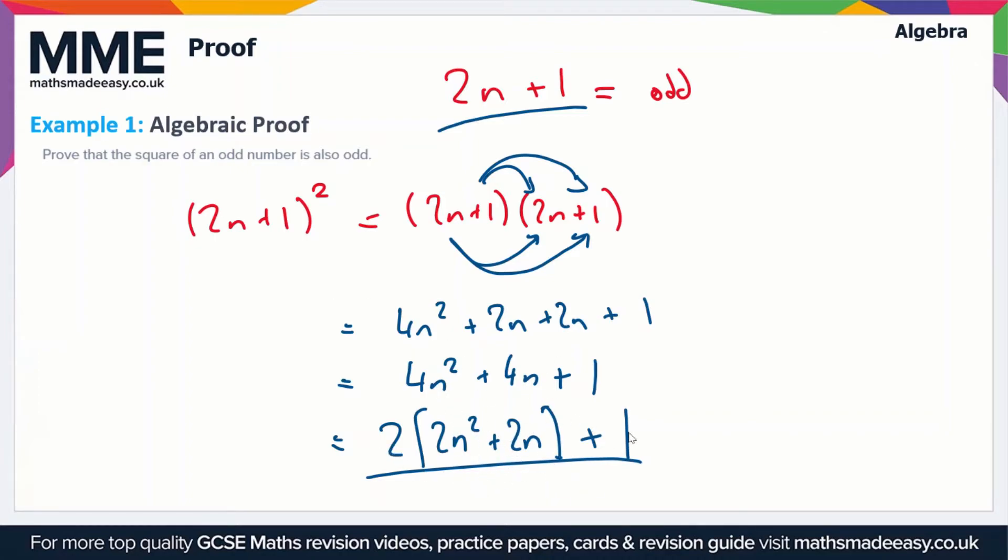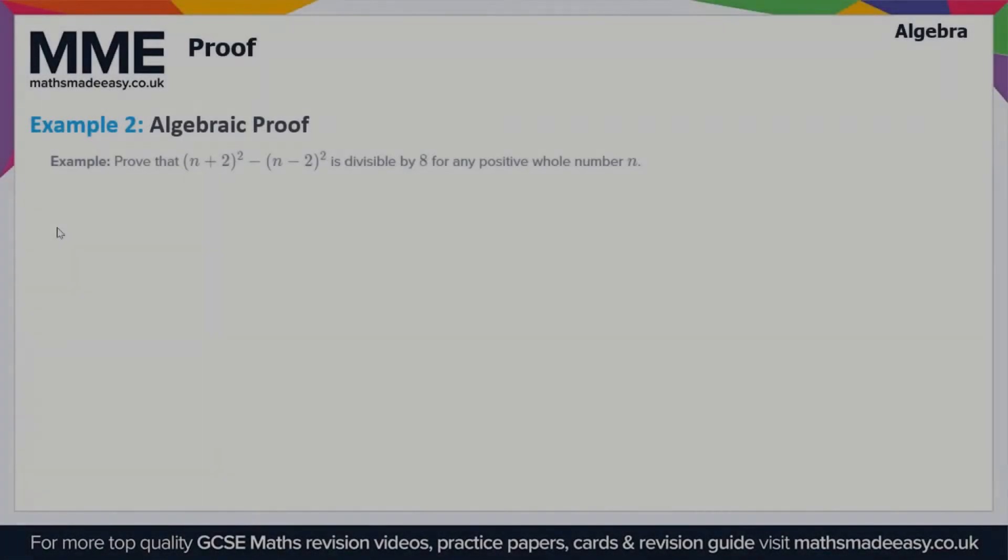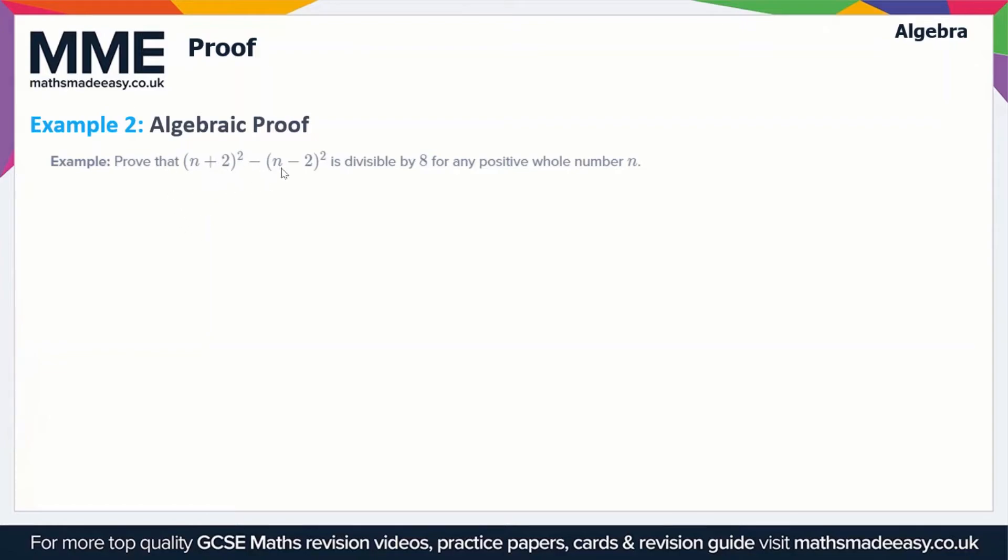Moving on to the second example: we have to prove that (n + 2)² - (n - 2)² is divisible by 8 for any positive whole number n.